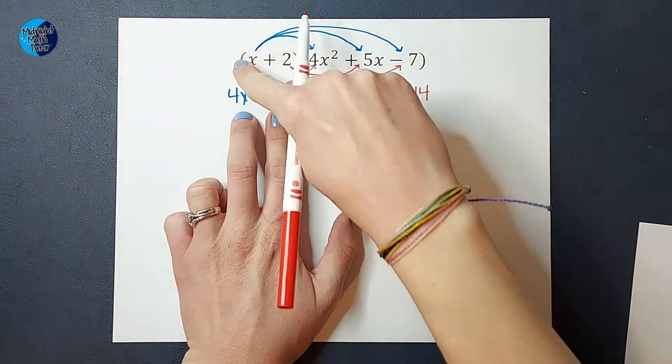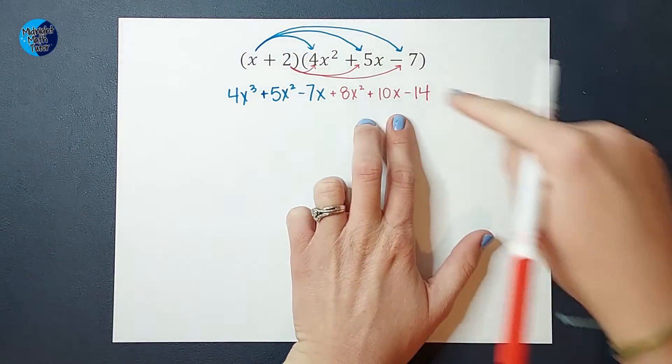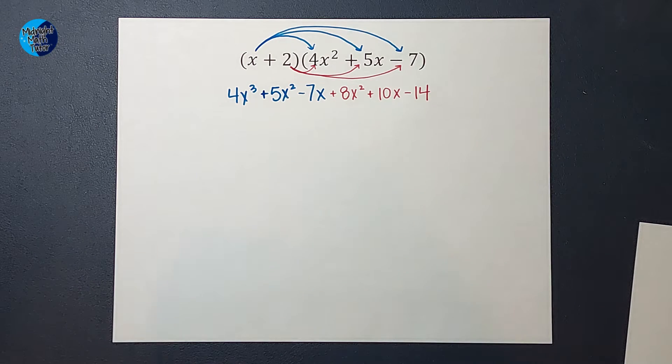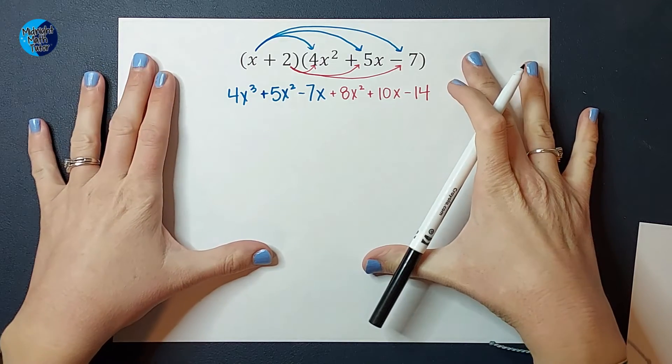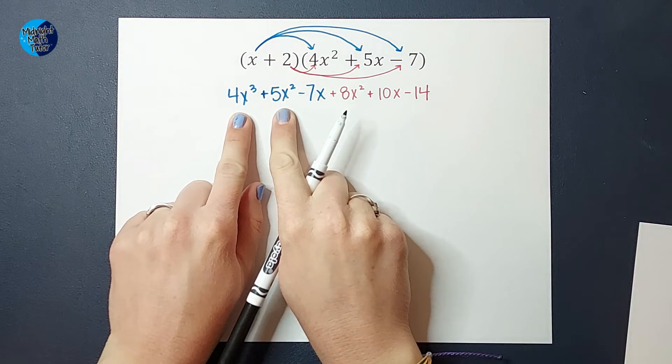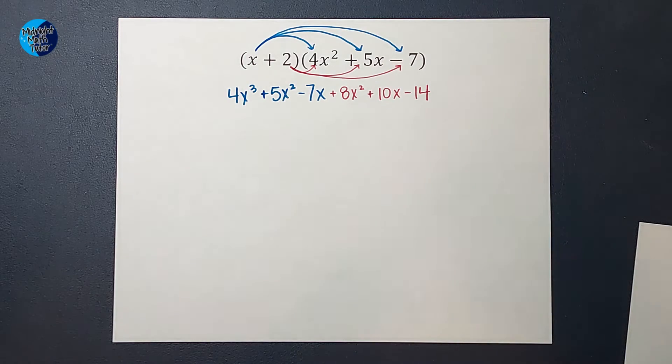See how the blue came from that first term being multiplied? The red came from the second term being multiplied. Where do we go from here? This is where we were talking about like terms. I can't add 4x cubed and 5x squared because they're not like terms.